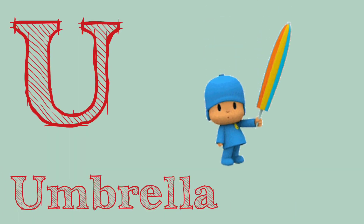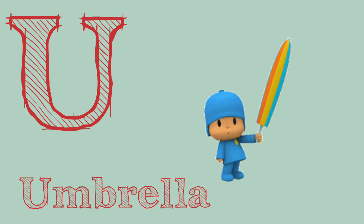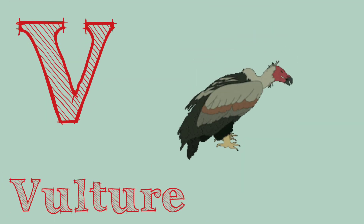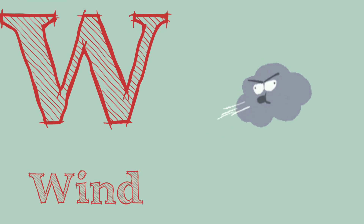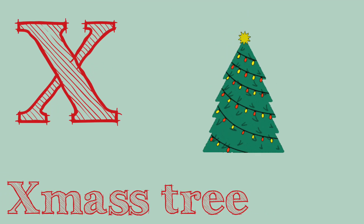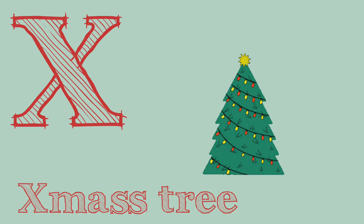U. U is for umbrella. V. V is for vulture. W. W is for wind. X. X is for x mystery.